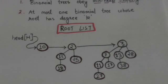Now a binomial heap H is accessed by the head[H], which is a pointer to the first root in the root list of binomial heap H.